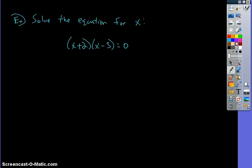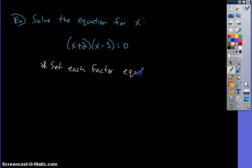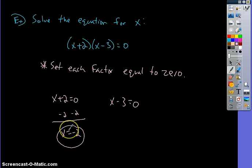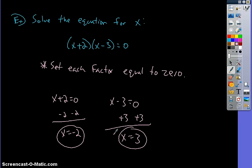Let's try another one. Looking at this equation, pause the video and try it on your own. Remember, the rule is to set each factor equal to 0. x+2 equals 0, and x−3 equals 0. Solving: subtract 2 gives x equals negative 2; add 3 gives x equals 3. So my solutions are negative 2 or 3.